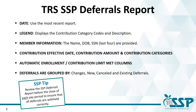Before we dive into what the SSP deferrals report looks like, let's talk about its notable details. The date is in the upper right-hand corner. The legend is located on the first page and displays the contribution codes and descriptions. You'll also find member information such as the enrollee's name, date of birth, and last four digits of their social security number. The report also includes contribution effective dates, contribution amounts, and contribution category. You'll see if a member has been identified as automatic enrollment or has met their contribution limit for the year. Finally, deferrals will always be grouped — you'll notice areas for changes, new deferrals, existing deferrals, and cancellations. Be sure to review the SSP deferrals report before the close of each pay period cycle to ensure all deferrals are withheld correctly.